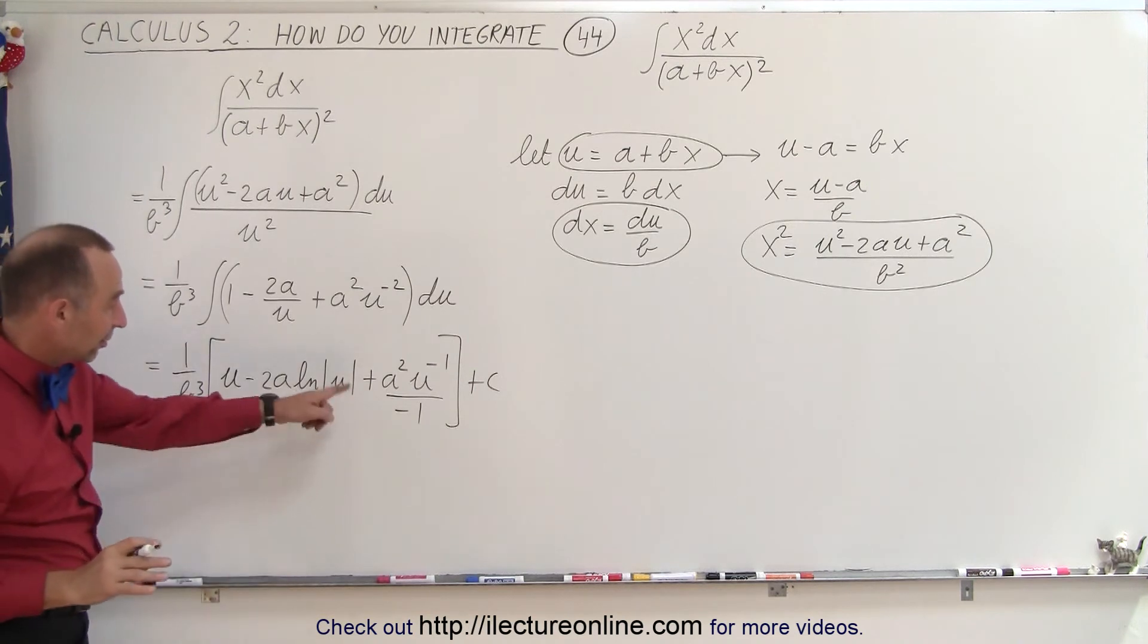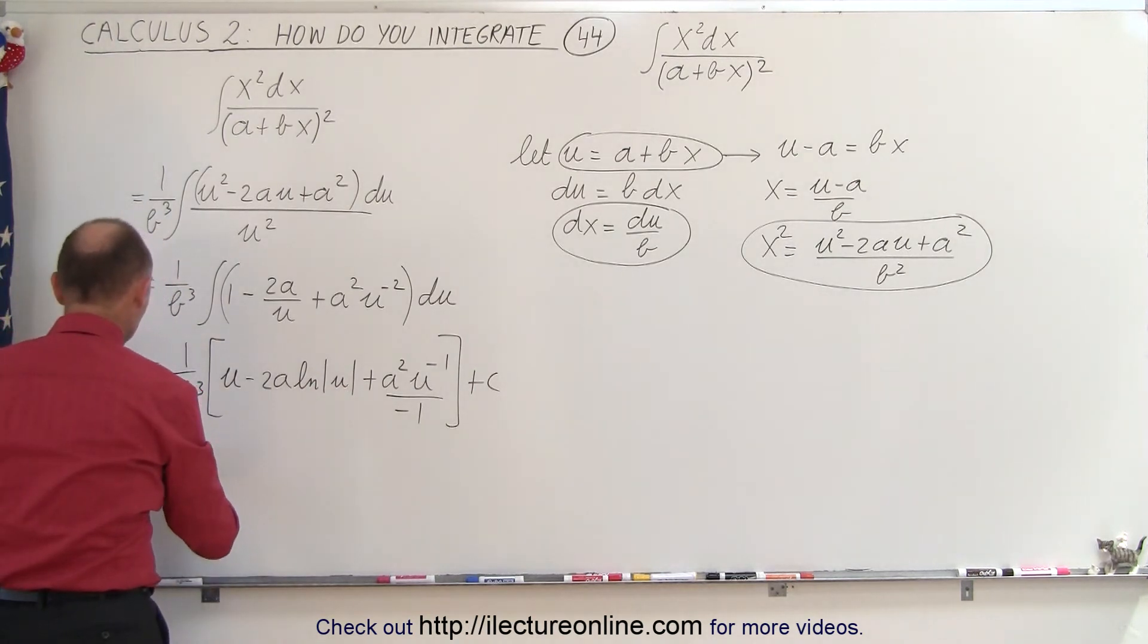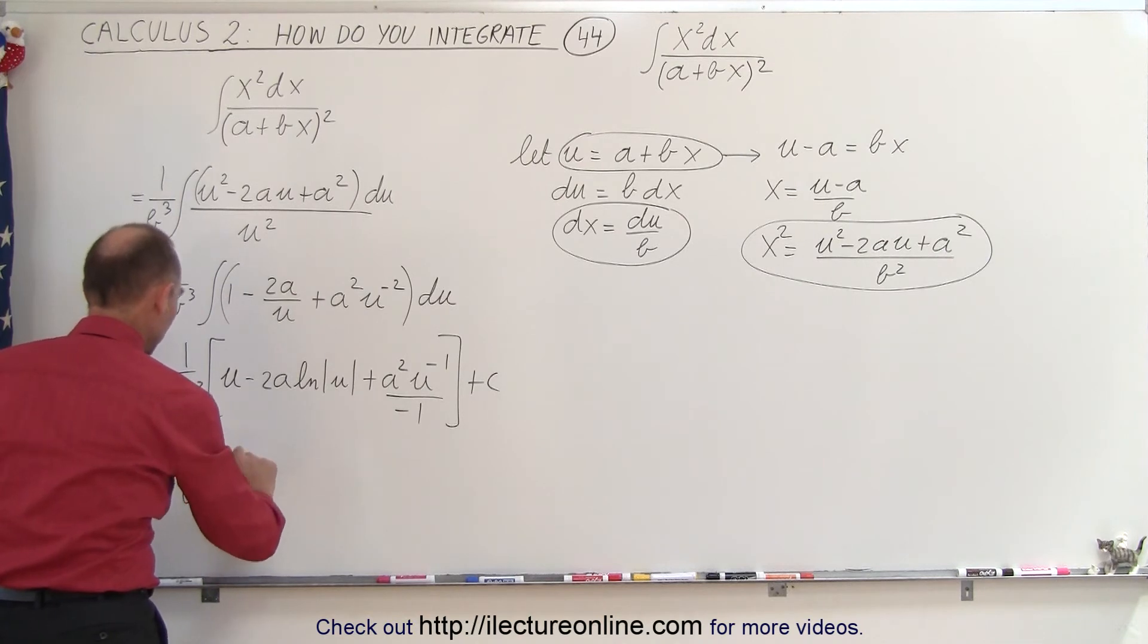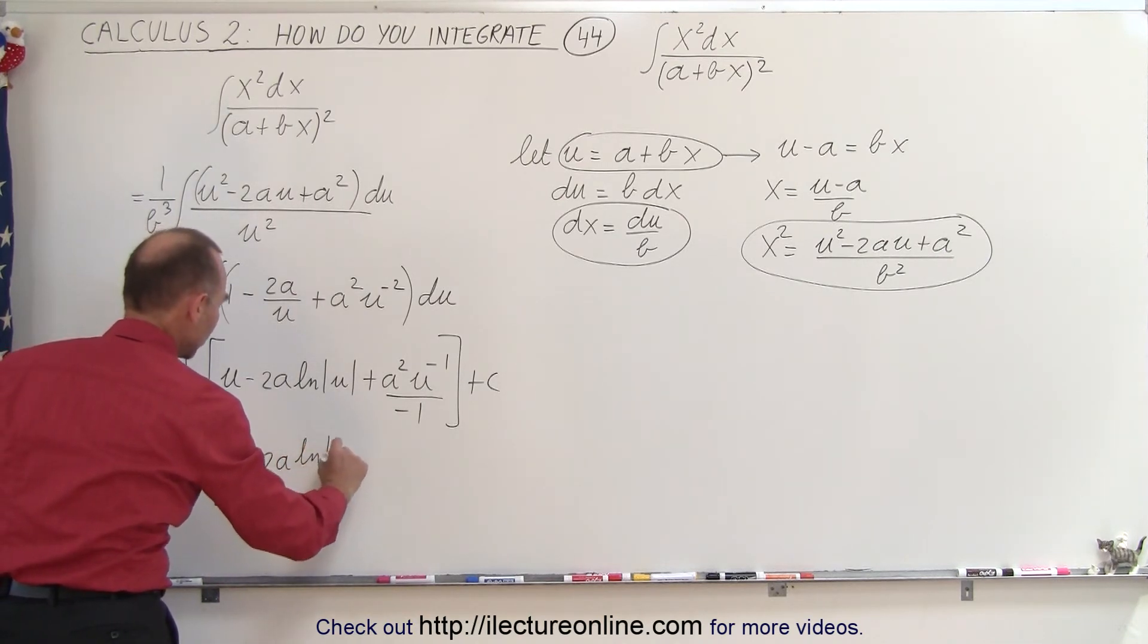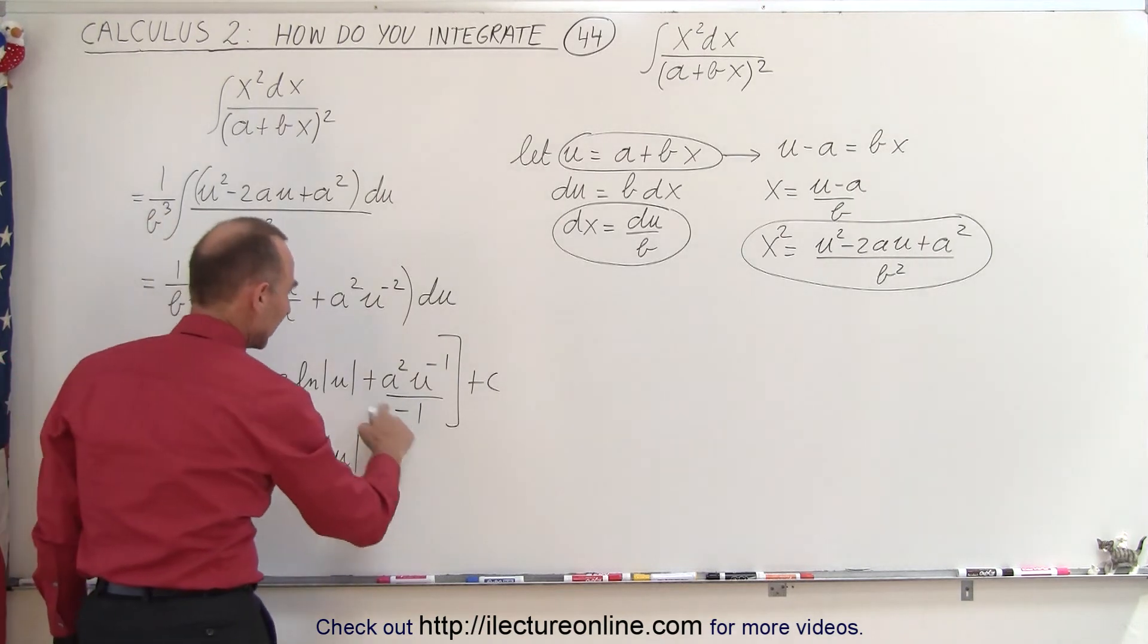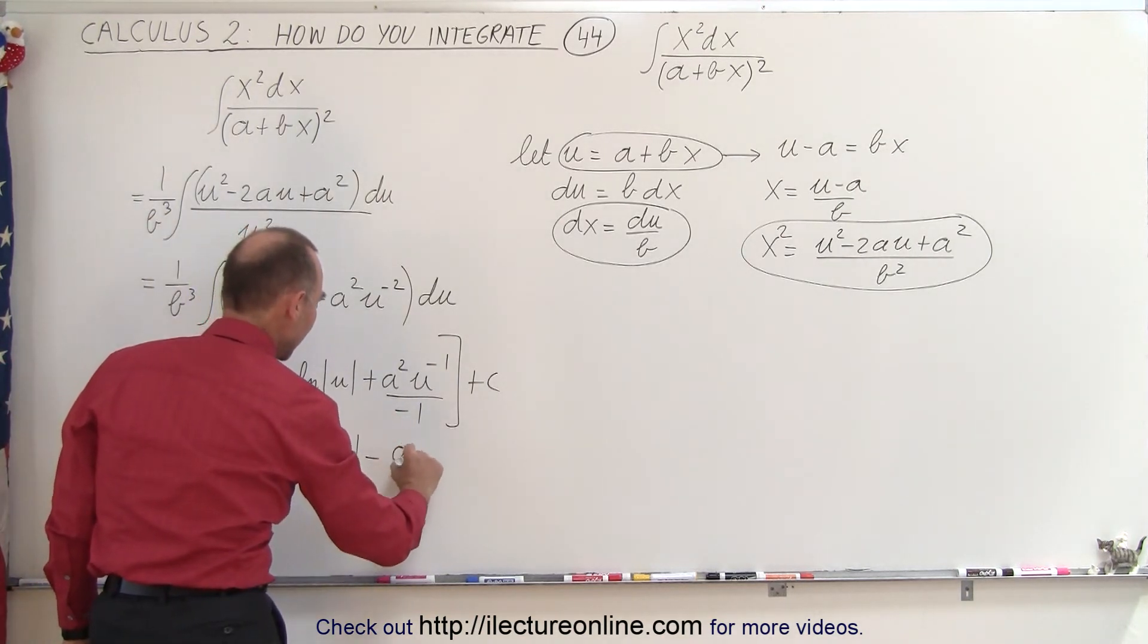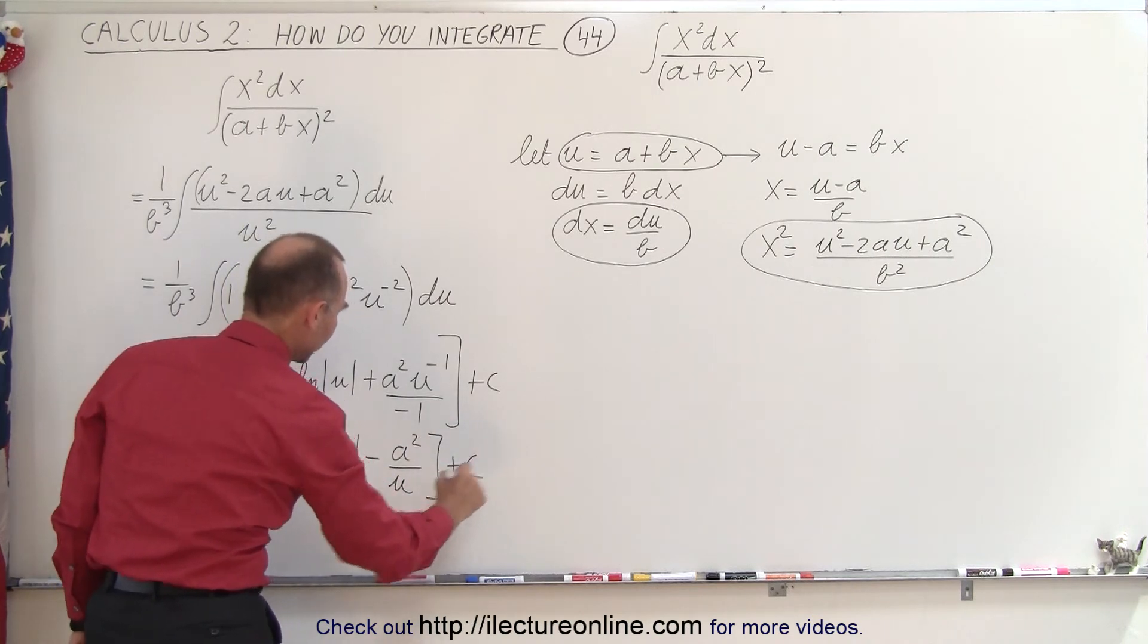And then simplifying this a little bit more, we get the following. This is equal to 1 over b cubed times u minus 2a times the natural log of u, and here we get a minus a squared over u, plus a constant of integration.